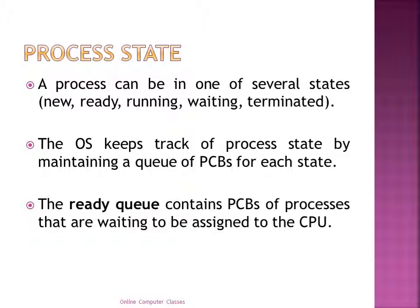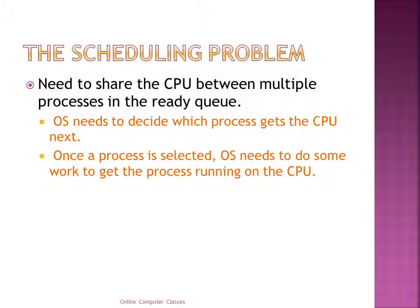The scheduling problem is the need to share the CPU between multiple processes in the ready queue. There can be one to thousands of processes in the ready queue, and the CPU needs to be shared between them. The operating system needs to decide which process gets the CPU next. Once a process is selected, the OS needs to do some work to get the process running.